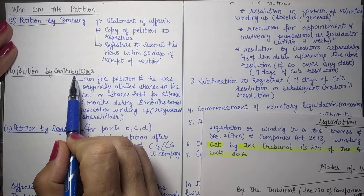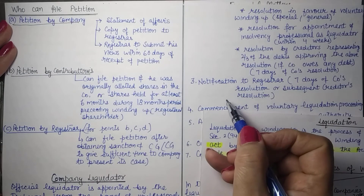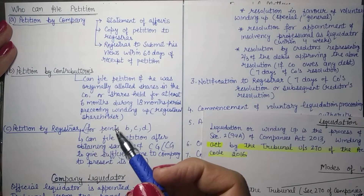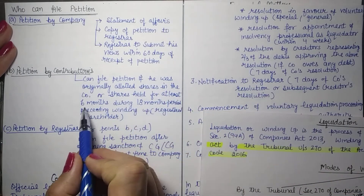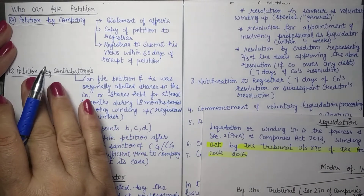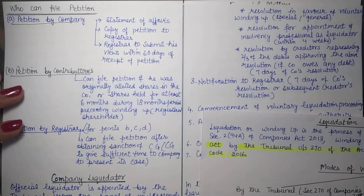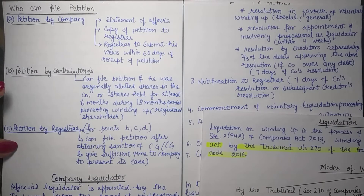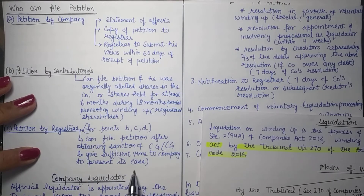Another petition is by contributaries — basically the shareholders or members of the company. A person is a contributary if they are the original allottee of shares, or have received shares from the original allottee after their death, or have held shares for at least 6 months during the 18 months preceding the winding up application. Such contributaries can also file a petition with the tribunal. Finally, the registrar can also file a petition after obtaining sanction of the central government.